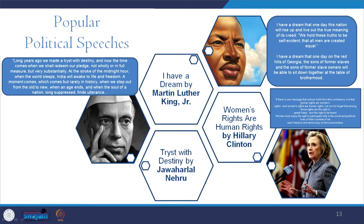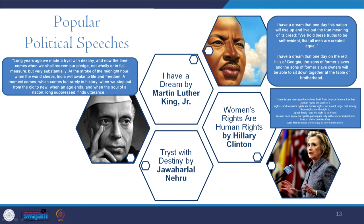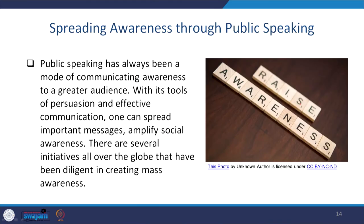Martin Luther King Jr.'s 'I Have a Dream': 'I have a dream that one day this nation will rise up and live out the true meaning of its creed — we hold these truths to be self-evident, that all men are created equal. I have a dream that one day on the red hills of Georgia the sons of former slaves and the sons of former slave owners will be able to sit down together at the table of brotherhood.' What Martin Luther King talked about — equality through his political speech — was also a form of advocacy. Similarly, Hillary Clinton's speech 'Women's Rights are Human Rights' created awareness through public speaking.